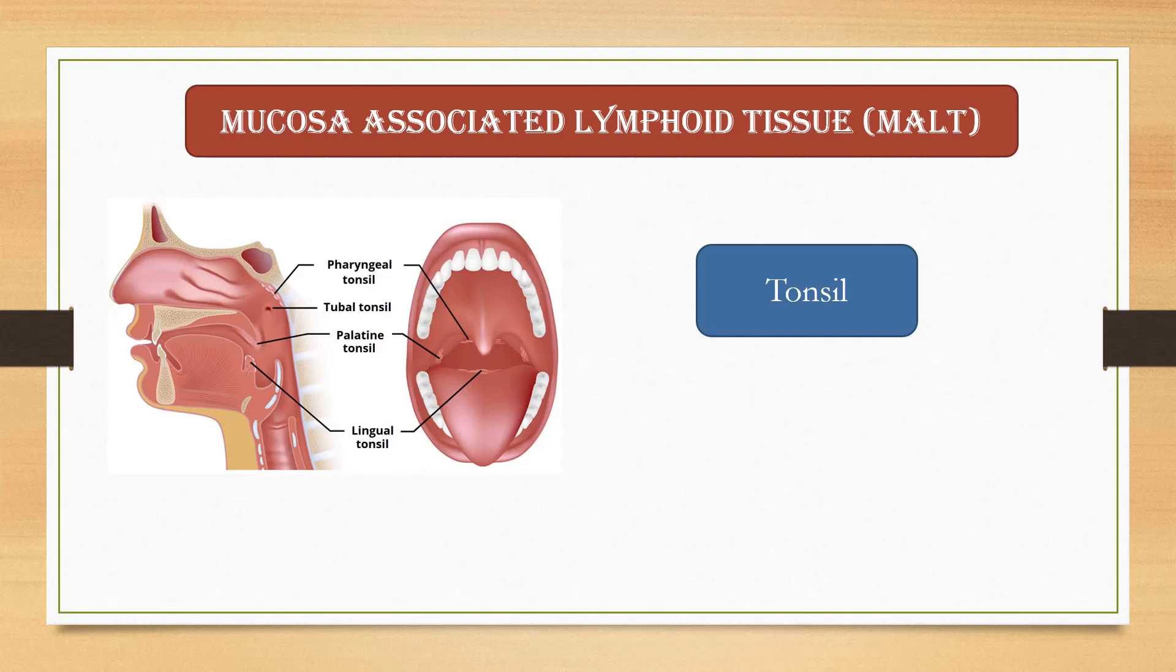Mucosal membrane lining the digestive, respiratory, and urogenital system is called mucosa-associated lymphoid tissue. These are similar to lymph nodes in structure but not encapsulated as lymph nodes. They are tonsils, Peyer's patches, and appendix.